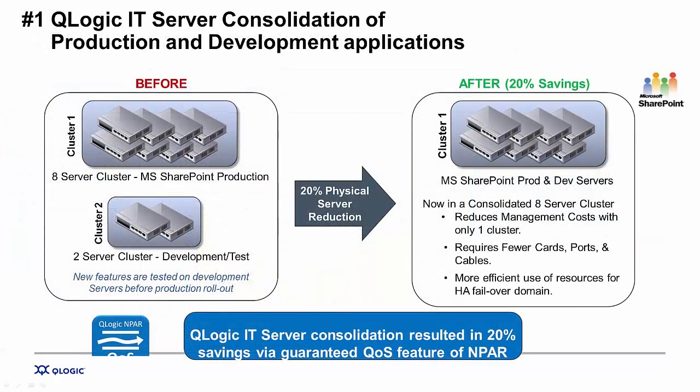Let's look at the power of N-PAR through a few case studies. First, how utilizing N-PAR saved Qlogic's IT department thousands of dollars. Qlogic IT used N-PAR to separate SharePoint test environment traffic from the production environment. Test and dev environments can be quite noisy and busy, impacting production when on shared resources. Originally, a dedicated cluster was used for test and dev. By implementing N-PAR in the production environment, dedicated networks for test and dev were carved out, combining resources into one single eight-server cluster — reducing management overhead, reducing hardware, and greatly increasing flexibility and high availability.